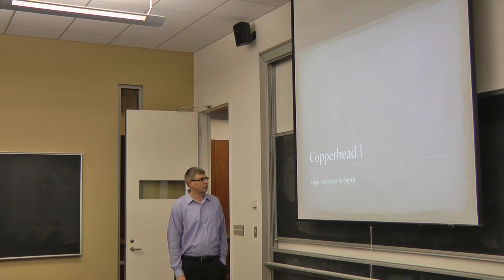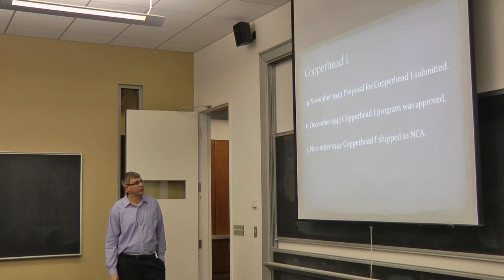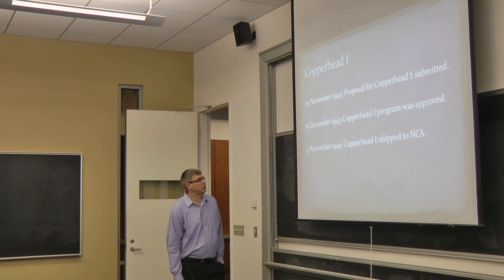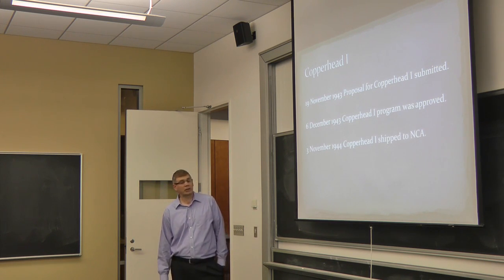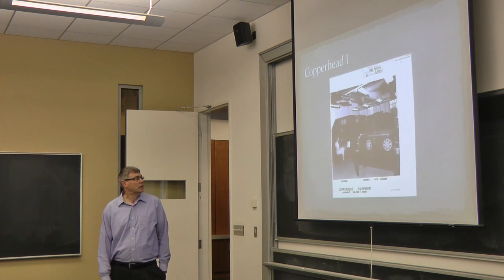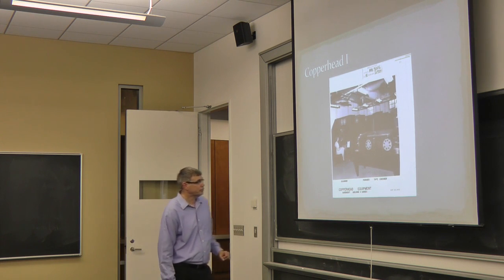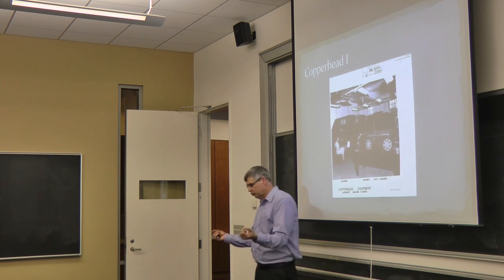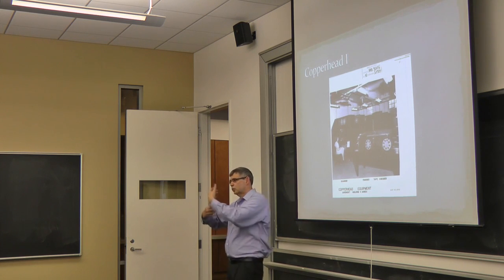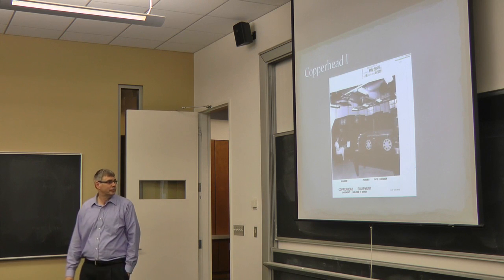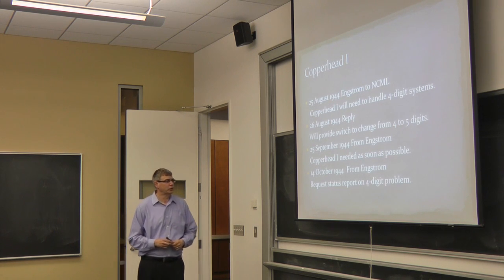So Copperhead 1 was designed to align these messages in depth. The proposal for the machine was submitted in November 1943, middle of the month. It was approved at the beginning of December. And the first machine was shipped to the Naval Communications Annex in November 1944. Five of them were produced. There were two pieces to the machine. There was a punch in which the messages were recorded, and then there were scanners on which the messages were run against.